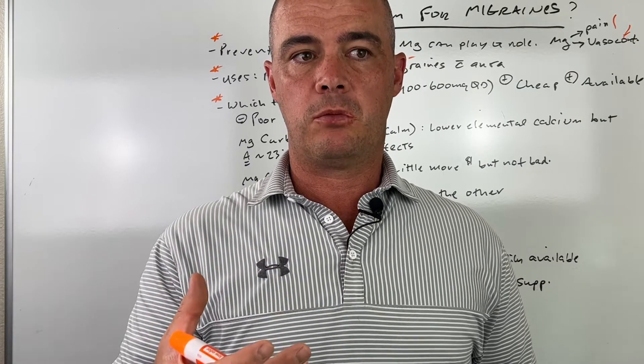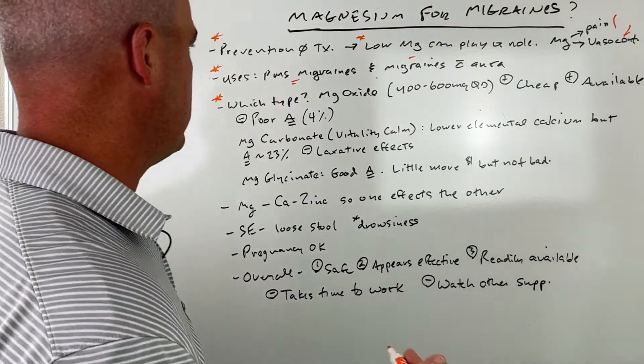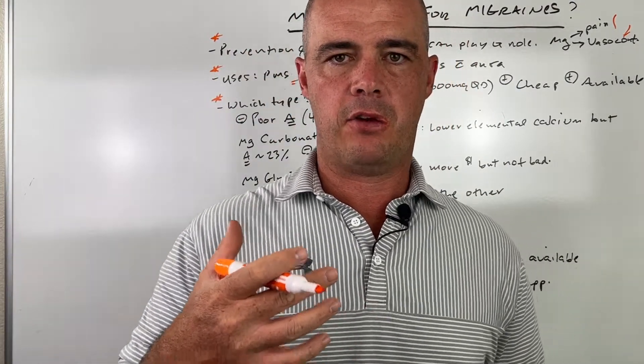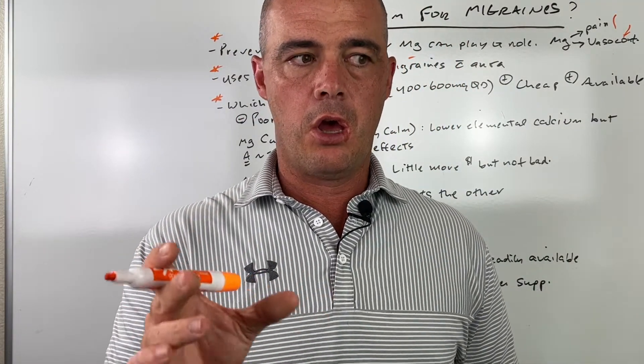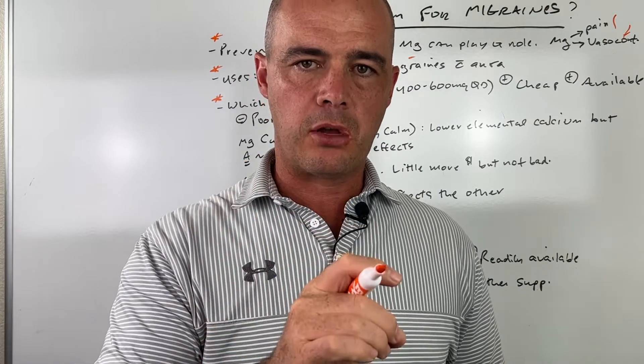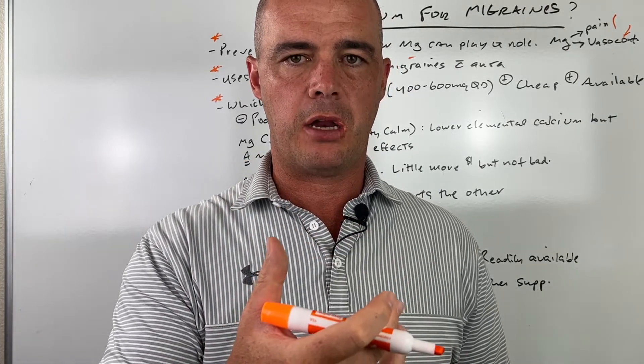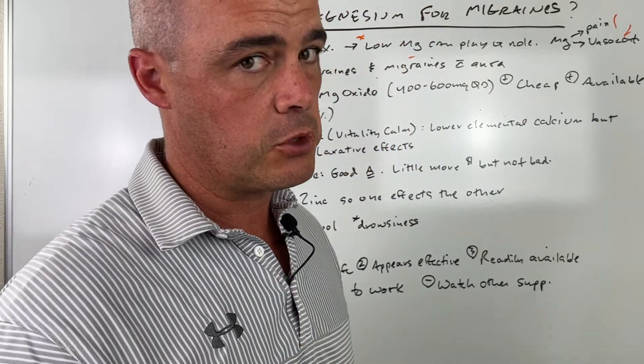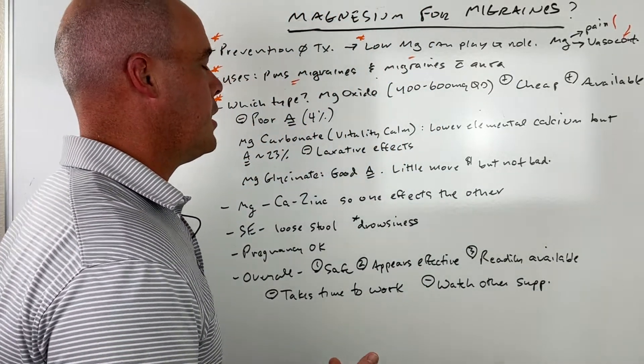Why that's important is because, for example, with magnesium oxide, it has a good amount of magnesium available in the molecule. The problem is because of the bonds that are created when it comes into the body, very little is absorbed. Like magnesium oxide, we believe it's only 4% absorption.